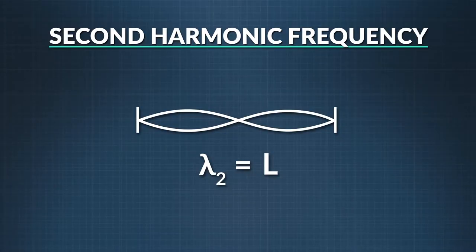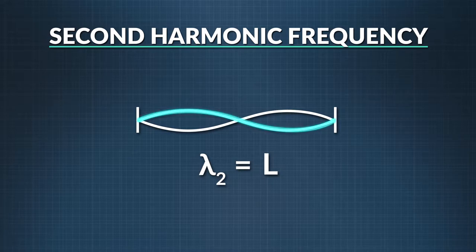But we could also have a standing wave like this, again with a node at each end, but now with a node in the middle. This is the second harmonic with one wavelength corresponding to the string's length.